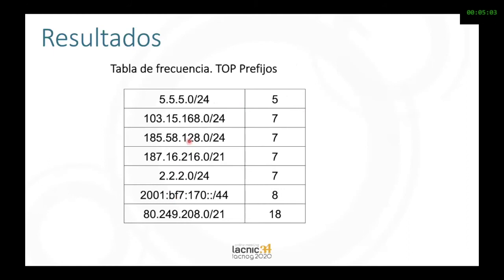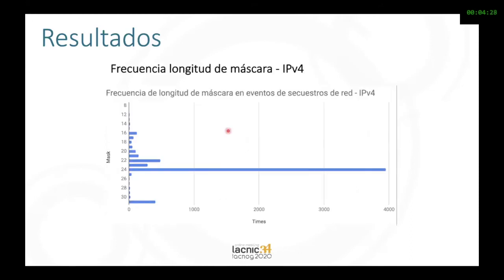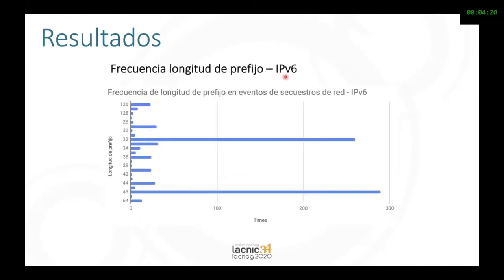Frequency table — here you have the prefixes that receive more hijacks. We see a slash 24, and there's an IPv6 prefix, a slash 44. I remember that this prefix doesn't have RPKI, so it's interesting to see that. The slash 24 is the most frequent prefix length for IPv4. The most frequent prefix length for IPv6 is a slash 48, followed by a slash 32.